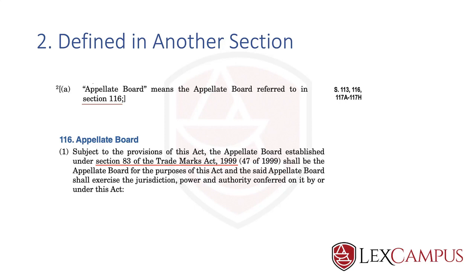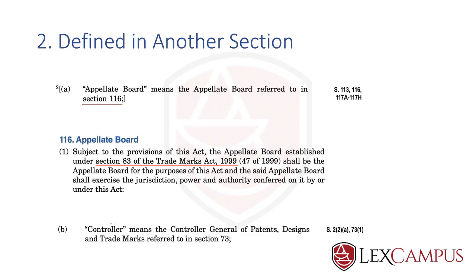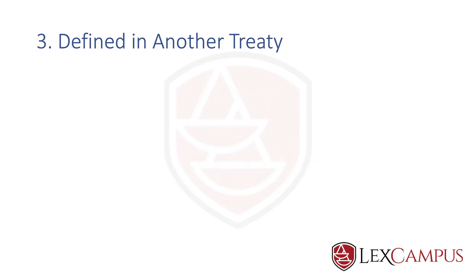So the second type is defined in another section. Section 116 is a good example. Similarly, section 2(1)(b) — 'controller' means the controller general of patents, designs and trademarks referred to in section 73 — again takes you back to another section for the full definition.